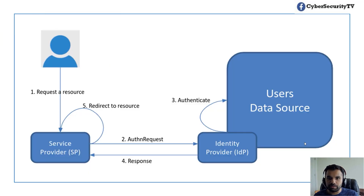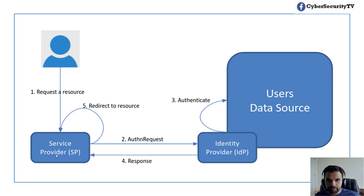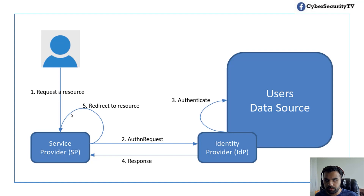Now this is the easier way to understand. There are three parties: the user, the service provider, and the IDP — identity provider. First, the user requests the service provider. Then the request goes to the IDP. The IDP authenticates with the user data source. If everything works, the IDP goes back to the service provider, the service provider says the signature looks good from the IDP, and it redirects the user to the website. This is the typical workflow you want to understand.